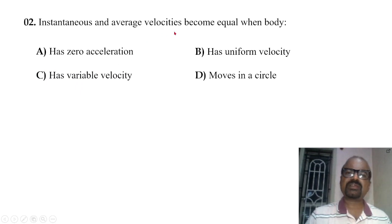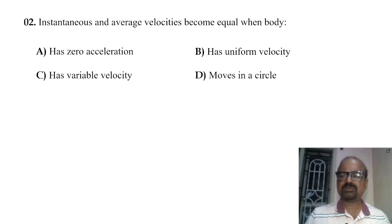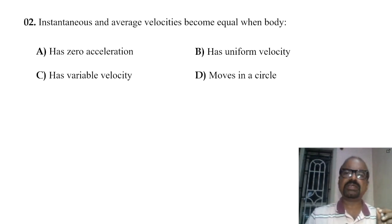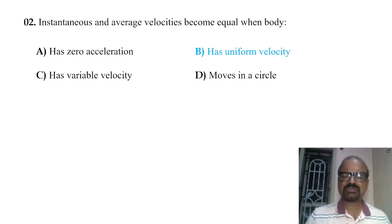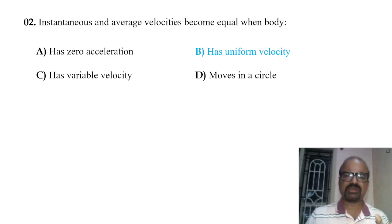Instantaneous and average velocities become equal when the body has uniform velocity. At any instant or interval of time, the instantaneous velocity and average velocity are the same.